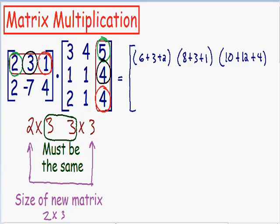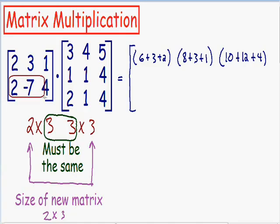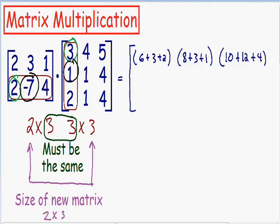Now we have multiplied row 1 of the first matrix by every single column of the second matrix. So now we need to do the exact same thing with the second row of the first matrix. I will put a box around the second row, and multiply it with every column of the second matrix, starting with the first column. Circling the first numbers in green, second in black, and third in red: 2 times 3 is positive 6, negative 7 times 1 is negative 7, and 4 times 2 is positive 8. We have multiplied the second row by the first column.